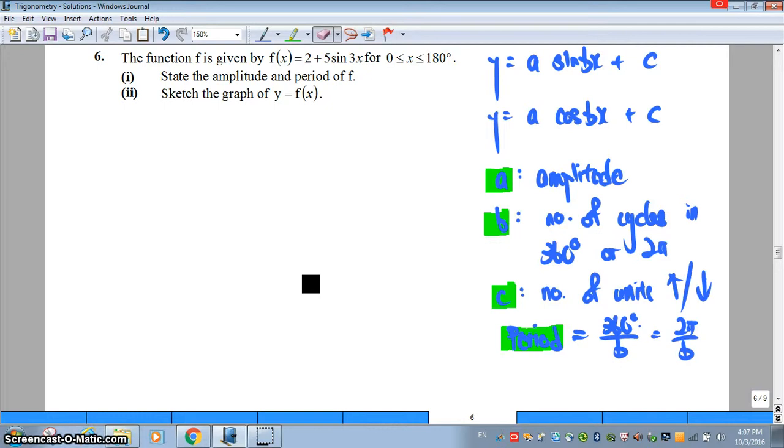What does A tell us? It tells us the amplitude of the curve itself, which is the maximum as well as the minimum value.